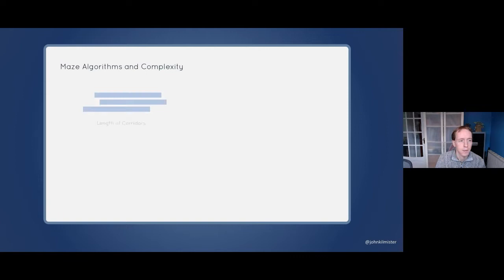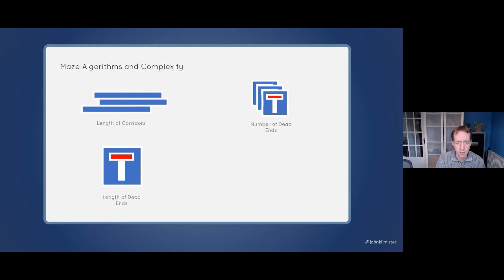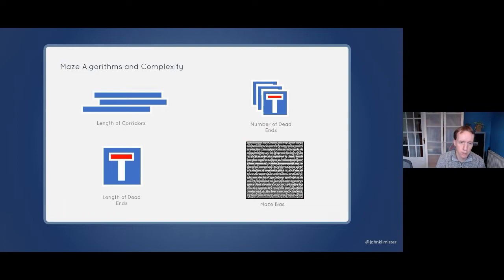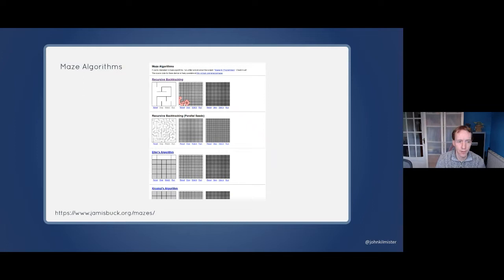Each maze algorithm comes down to a number of smaller factors: the length of the corridors, the number of dead ends, the length of those dead ends. Certain algorithms have different biases — this one, for example, has a horizontal bias, so you can see a lot of the corridors run along the horizontal axis. We don't have time today to go through all 11 algorithms, but there's a great website where you can play an animation that takes you through each of the steps in generating the mazes.